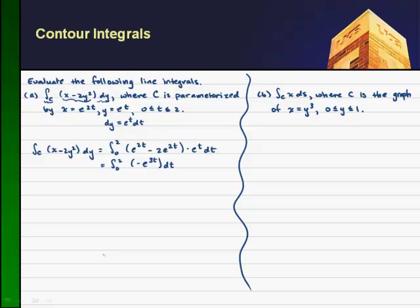And if I integrate this, I get a negative one-third e to the 3t evaluated from 0 to 2. This gives me a negative one-third. If I evaluate the upper limit, I get e to the 3 times 2 minus e to the 3 times 0. That gives me negative one-third, and I get e to the 6th minus 1.